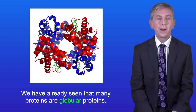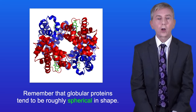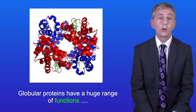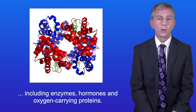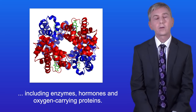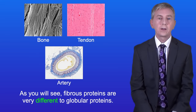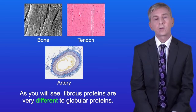We've already seen that many proteins are globular proteins. Globular proteins tend to be roughly spherical in shape and are water-soluble. They have a huge range of functions including enzymes, hormones and oxygen-carrying proteins. Another category of proteins are fibrous proteins, and as you'll see, fibrous proteins are very different to globular proteins.